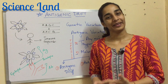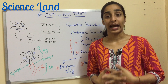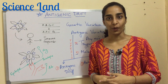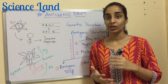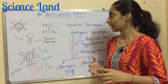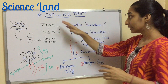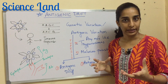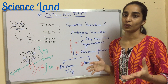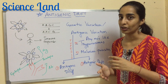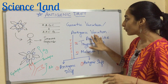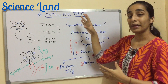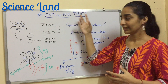Hello friends, welcome to Science Clan. I'm Nikita, and today I'm going to talk about antigenic drift. Antigenic drift is a kind of genetic variation which is also known as antigenic variation.